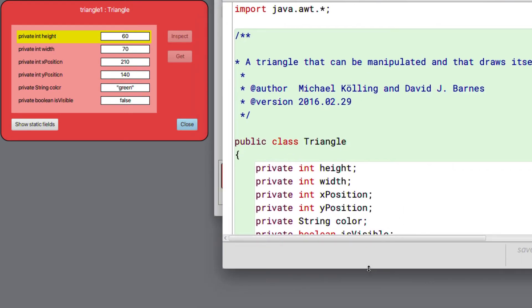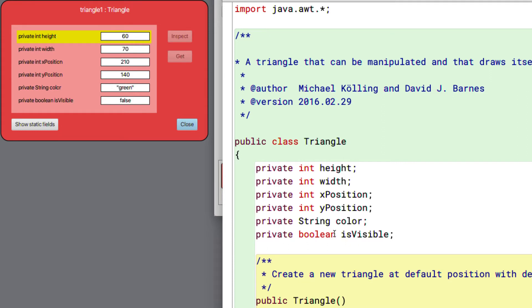So here it is. And what we see near the beginning of the class is a set of definitions for height, width, x position, y position, color and is visible.